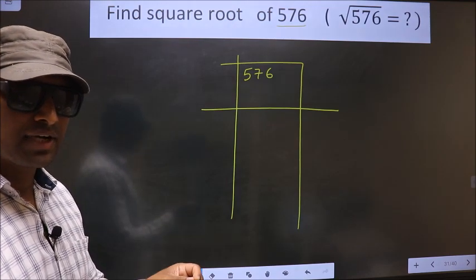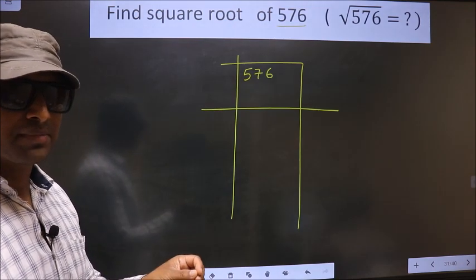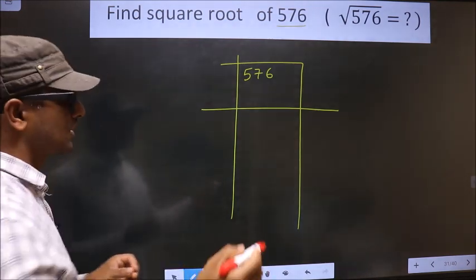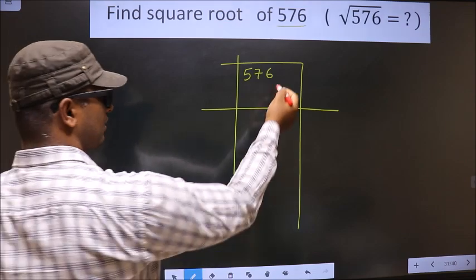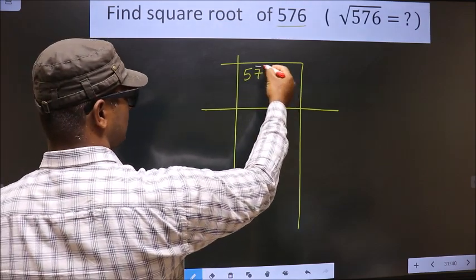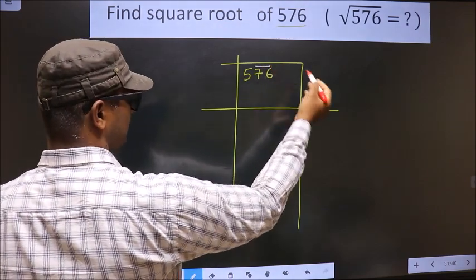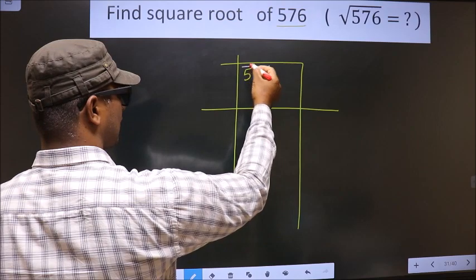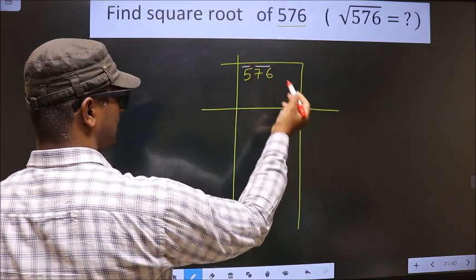Now we should divide the given number into pairs, starting from this side. These two numbers will be one pair and this one number will be alone.